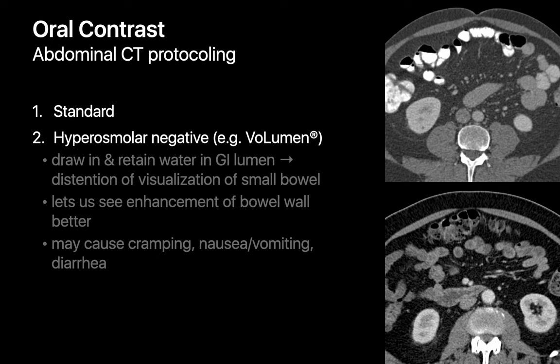The situation with oral or enteric contrast is more straightforward. You may forego oral contrast sometimes, perhaps because it's a trauma situation or maybe because it's a renal stone case where oral contrast doesn't matter. However, use of oral contrast is typically the default, and you'll choose standard oral contrast, which makes the bowel lumen appear whiter or higher in attenuation and easier to distinguish from everything else going on in the abdomen. In a small number of cases, you'll opt for hyperosmolar negative oral contrast, which makes the bowel lumen appear darker or lower in attenuation.